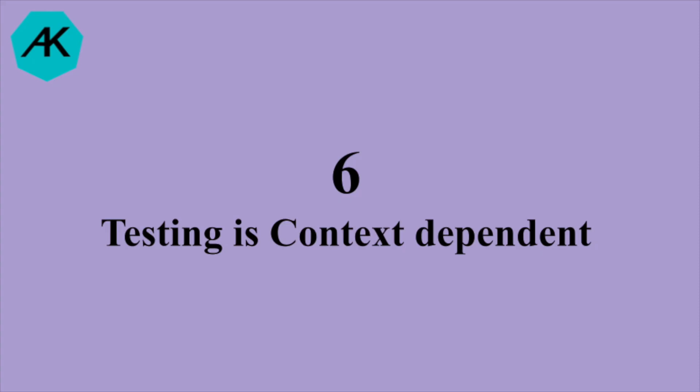The sixth principle of software testing is testing is context dependent. That means your software testing strategy and techniques will be different for a mobile app, different for automotive software, and different for hardware. If your hardware and software are together, it will be different too. So remember, you cannot have one standard operating procedure for software testing — it is context dependent.